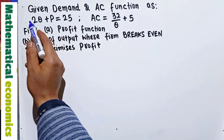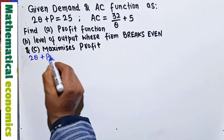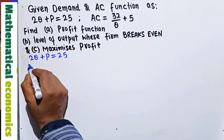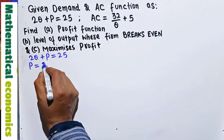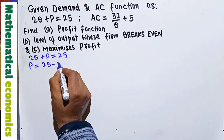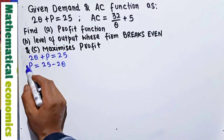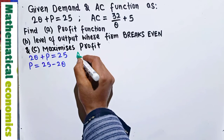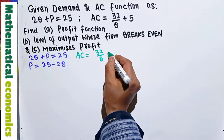We have been given the demand function: 2Q + P = 25. From this demand function, we solve for P to find the inverse demand function. So P will be equal to 25 minus 2Q. We have rewritten the given demand function in terms of the inverse demand function. Also, the average cost function is given as AC = 32/Q + 5.